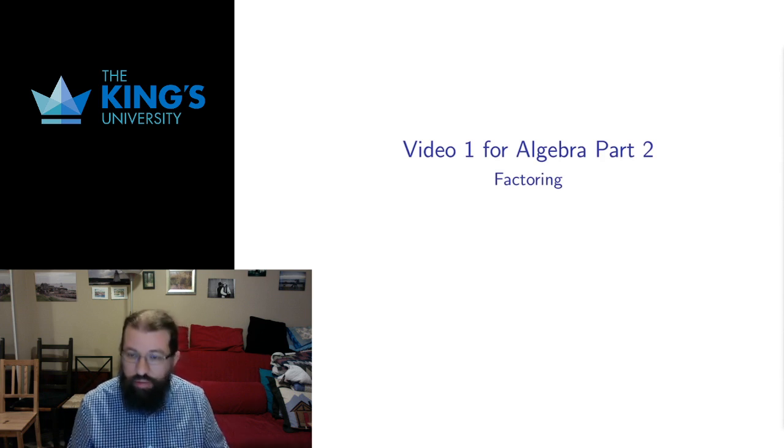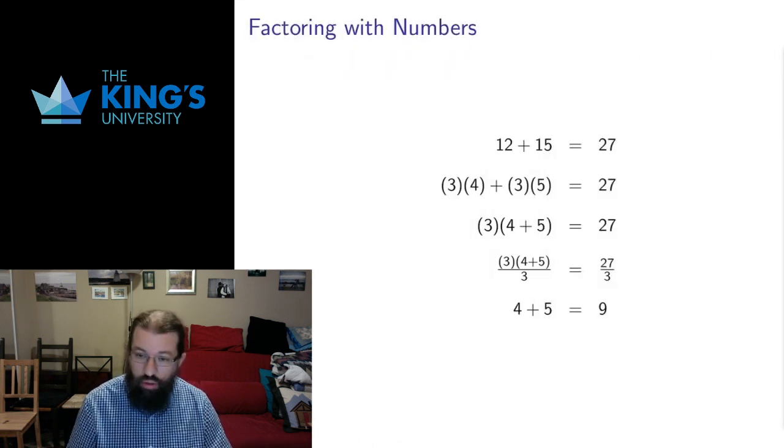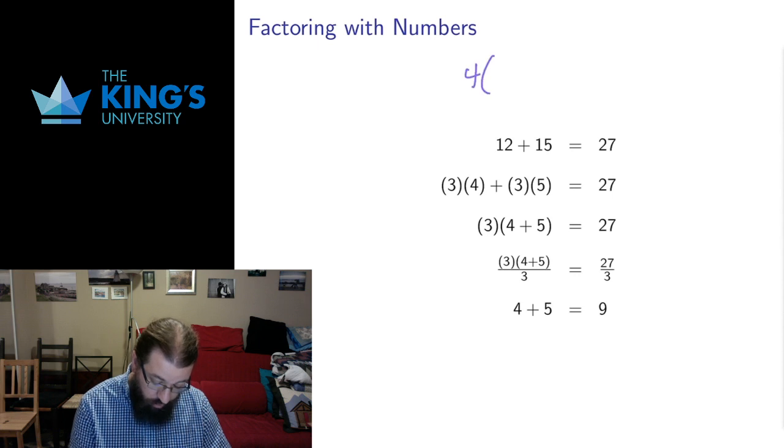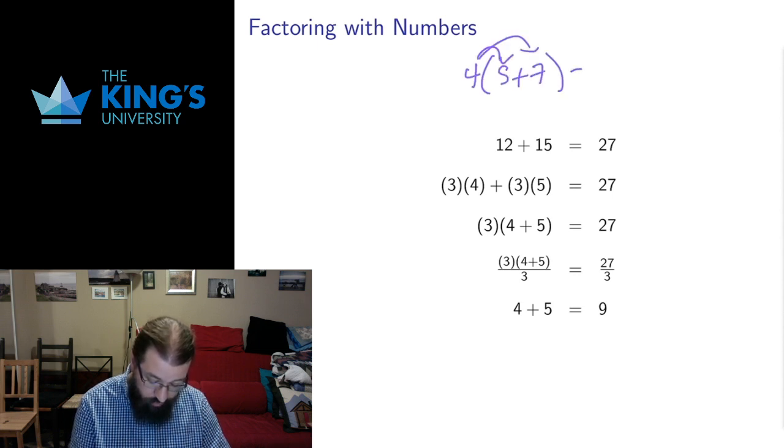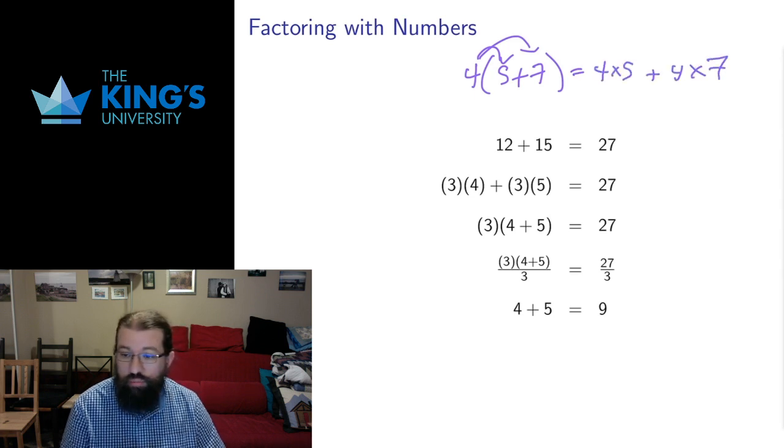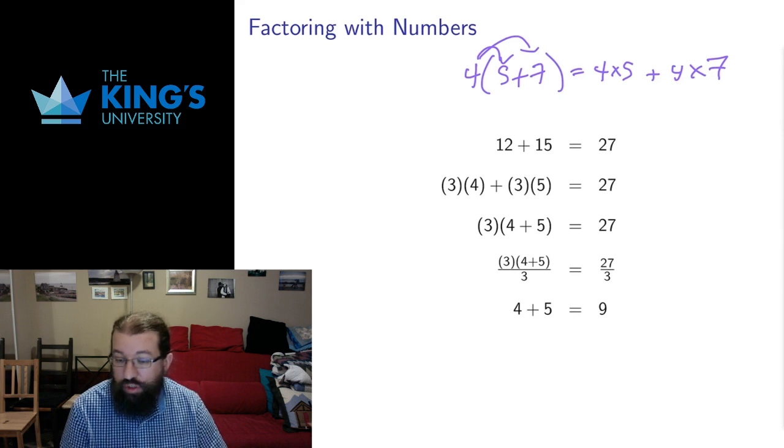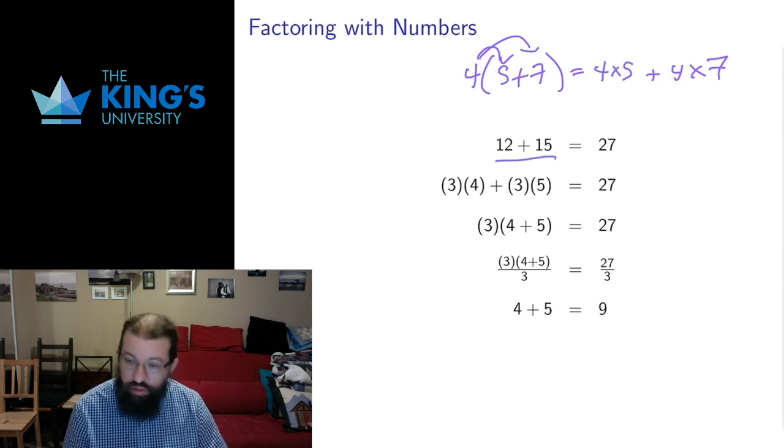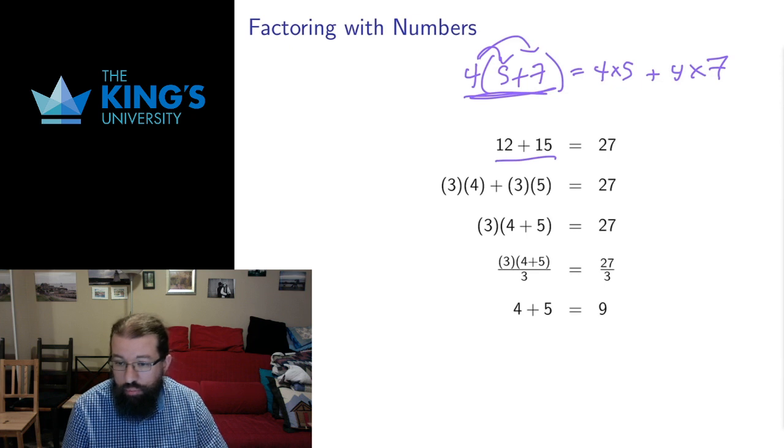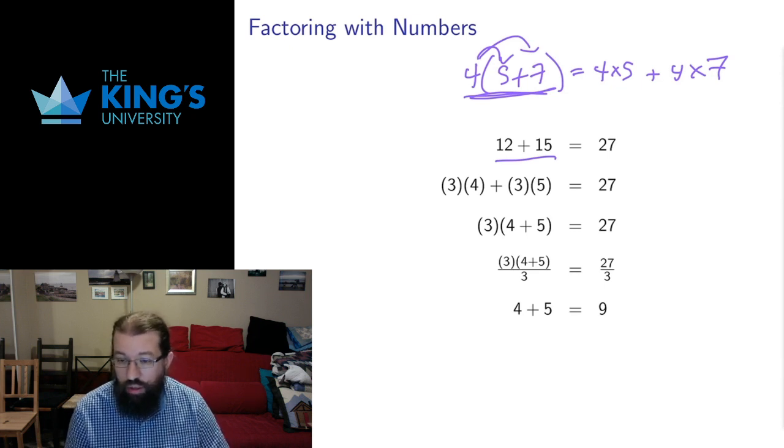To understand factoring let's go back to the case of numbers. Before we talked about the distributive law and that was where multiplication distributes over addition. Factoring essentially is doing the opposite. It's having something that is expressed as an addition and pulling it out so it looks like a distributive law. So returning it to something that looks like this form. And we do that by finding a common factor.